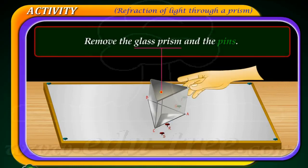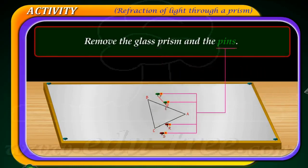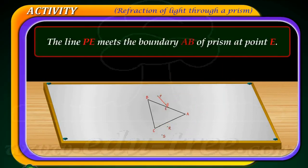Remove the glass prism and the pins. The line P E meets the boundary A B of the prism at point E.